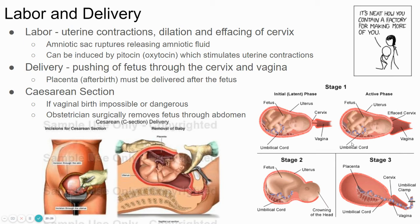Once the amniotic sac ruptures, the protective barrier around the fetus is breached, so it's possible an infection could set in if too much time went by. Usually they want the woman to have the baby within 24 hours of her water breaking. Sometimes labor starts and contractions start but the amniotic sac doesn't rupture — it could happen the other way. Contractions are the uterus contracting. The fetus is in the uterus, and the uterus is a pouch-like muscle that contracts, just like your bicep can contract.